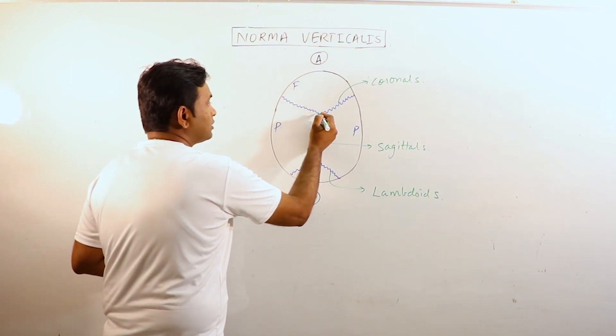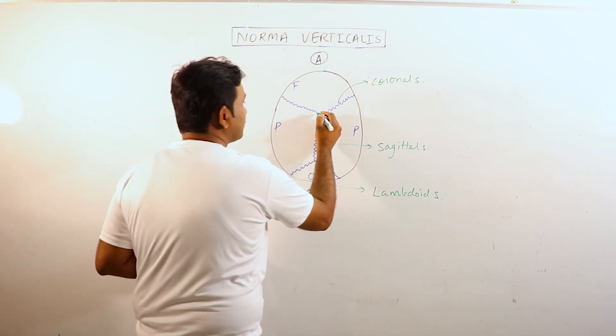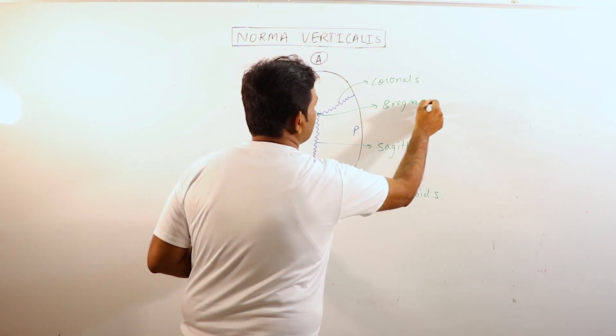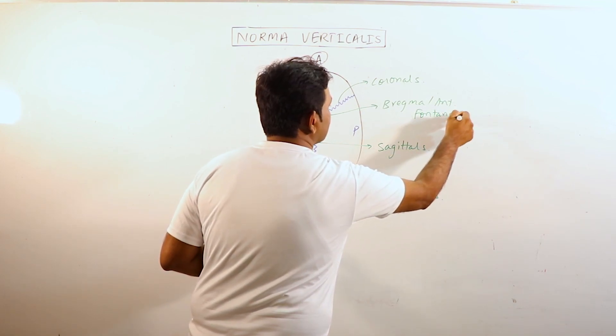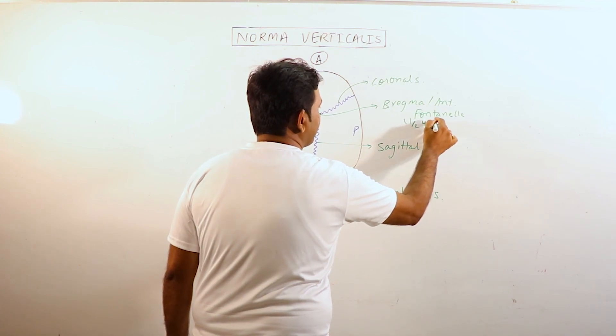At the time of birth, at the frontoparietal junction, there is a membranous gap which is known as Bragma. This Bragma is also known as anterior fontanelle. This gets closed by 1 and a half years of age.